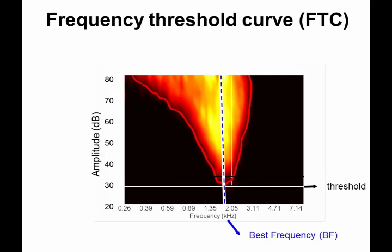Why is that relevant? Because it tells us everything we need to know about this auditory nerve fiber and connects it to its functional role. First, it characterizes the threshold — the lowest amplitude at which it responds — and it responds there at a certain frequency, which is called the best frequency. In this case, 2kHz, and at best threshold something like 30 dB.